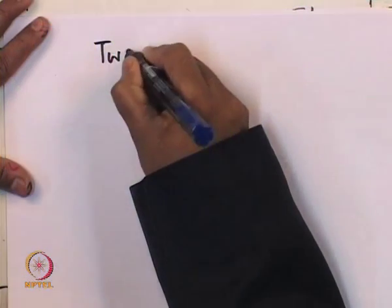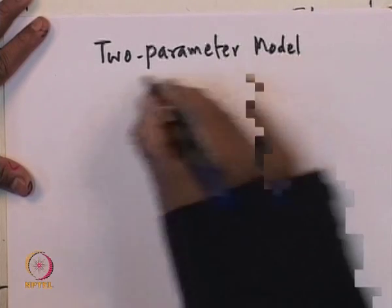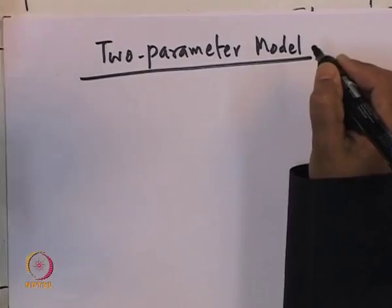Good morning. We continue our discussion on non-ideal reactor models and we are looking at a multi-parameter model or a two-parameter model. In the last lecture we just started our discussion on this. Depending on geometry we will have different kinds of models — it is not like there will be just one equation with two parameters applicable to any reactor system.